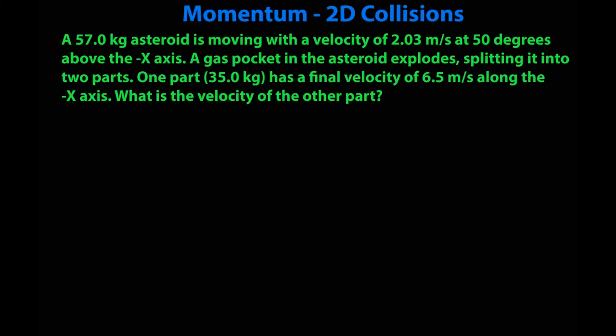A 57-kilogram asteroid is moving with the velocity of 2.03 meters per second at 50 degrees above the negative x-axis. A gas pocket in the asteroid explodes, splitting it into two parts. One part, 35 kilograms, has a final velocity of 6.5 meters a second along the negative x-axis. What is the velocity of the other part? So, mass is 57 kilograms, initial velocity is 2.03 meters per second, at 50 degrees above the negative x-axis. So, two things.